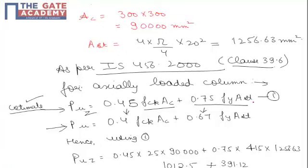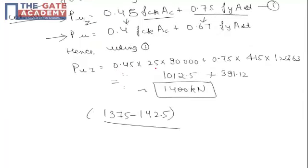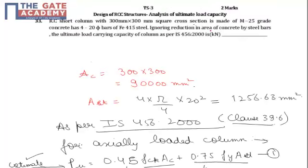So we will be using the formula that is labeled as 1. From equation 1, PUZ comes out as 0.45 into 25 into AC. The area of concrete is 90,000 mm square and it is mentioned in the question that there is no need to subtract the steel bars from the area of concrete.